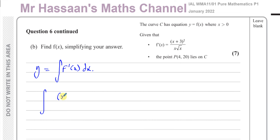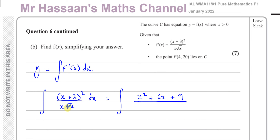When you want to integrate something, you have to get it prepared for integration. The way it's written right now I'm not able to integrate it. First, I'm going to expand the bracket on the top — that gives me x squared plus 6x plus 9. For the denominator, I'll express it in index form: x times root x is x times x to the power of a half. The square root of x is x to the power of a half, so x to the power of 1 times x to the power of a half gives x to the power of 3 over 2.